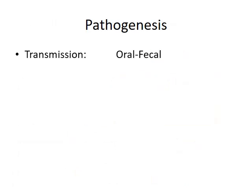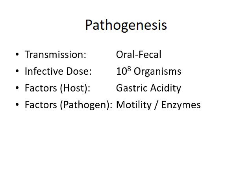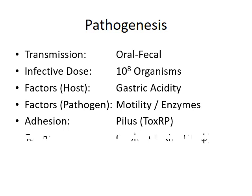Vibrio cholerae is responsible for the disease cholera, and the route of transmission is oral-fecal. The infective dose is quite high — 10 to the power of 8 organisms. Gastric acidity is one barrier that prevents the development of cholera. However, the organism counters this via motility and certain enzymes. Another important factor is adhesion via pilus, also called the toxin co-regulated pilus. The most important pathogenetic factor is the toxin.